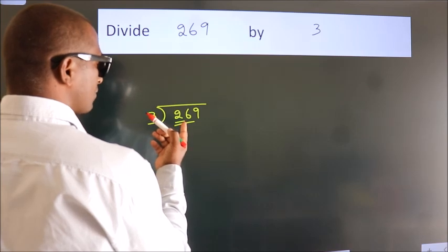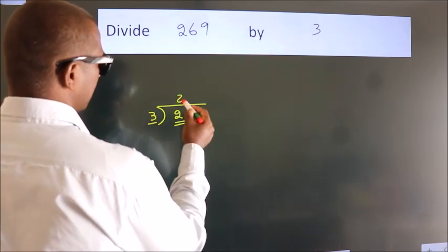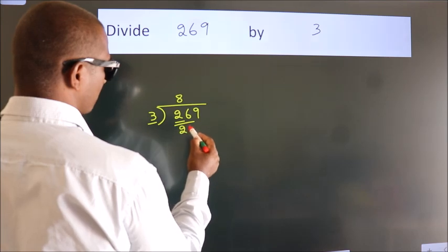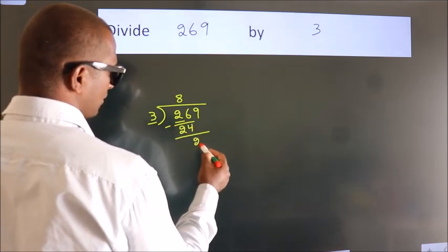A number close to 26 in the 3 table is 3 times 8, which is 24. Now we should subtract, we get 2.